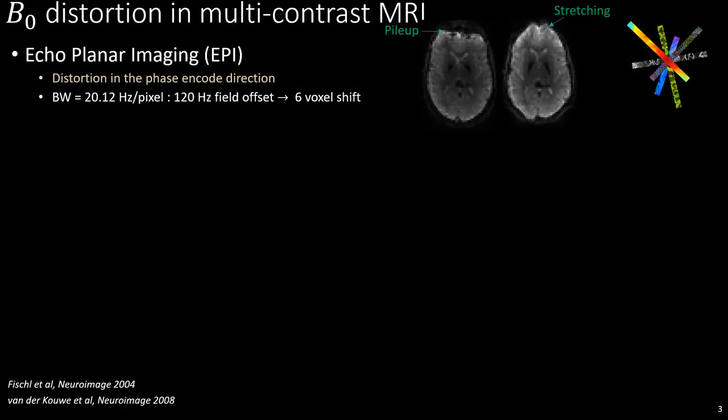Geometric distortion along the low bandwidth phase encode direction due to B0 inhomogeneity is a well-known problem in echo planar imaging. For the lesser known case of multi-echo GRE, the same distortions occur but in the readout direction instead, which is the low bandwidth direction here.